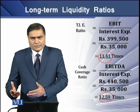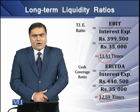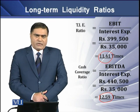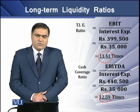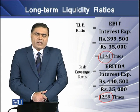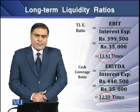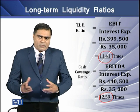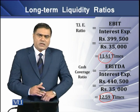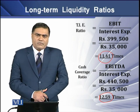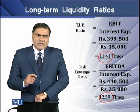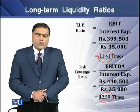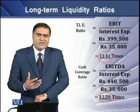This 12.59 times means that the firm has earned 12.59 times cash profit over its interest expense. In simple words, the firm has generated so much cash from its operations that it can pay off its interest expense over 12 times.